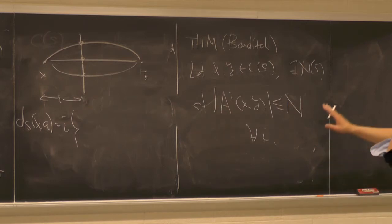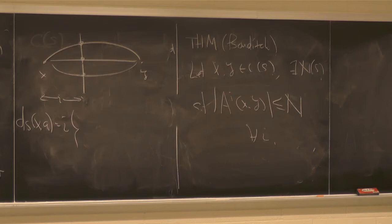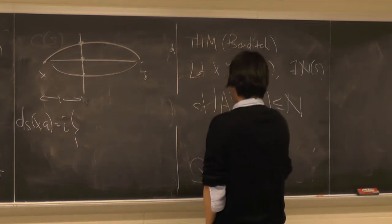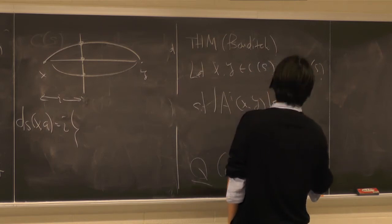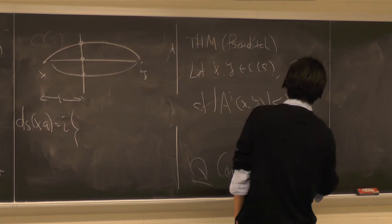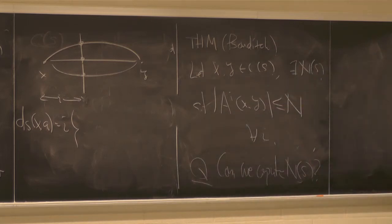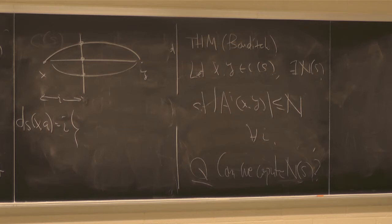The issue with this theorem is that N is not computable, because Bowditch uses limiting arguments. So my question is: can we compute N(S)? We're going to use local finiteness of the curve complex to compute this. I also want to observe that tight geodesics interact with subsurface projection very nicely. Let me recall the subsurface projection.